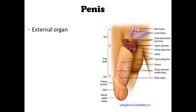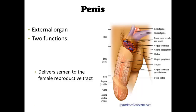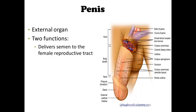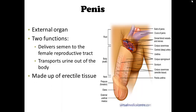The penis is an external organ and it has two functions. First, it delivers semen to the female reproductive tract. Second, it transports urine out of the body. So it transports both semen and urine. It is made up of erectile tissue, which you can see here on the outside in this image.